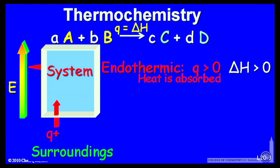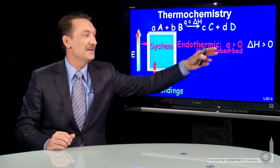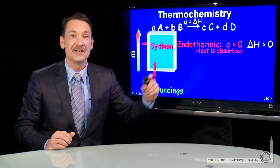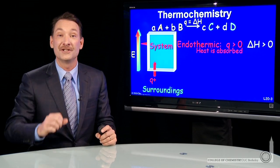We call it an endothermic process—endo, heat entering the system. Heat entering the system is positive and causes a positive enthalpy change. The enthalpy change is the state function associated with constant pressure energy changes.